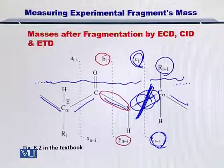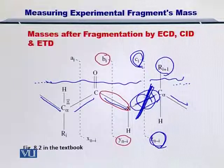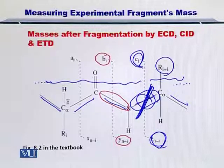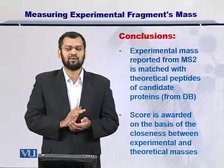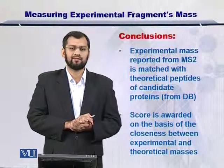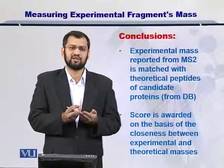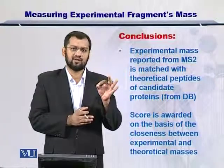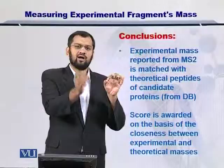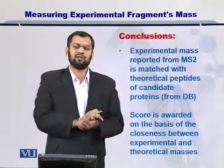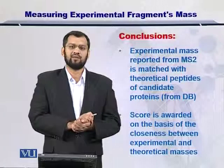Therefore, it is important to remember that if we use ECD and produce C and Z ions, not all C and Z ions will be of equal mass, because the alpha carbon and NH bond will be cleaved differently for different molecules. To conclude, the experimental measurement of the fragments can be done by using tandem MS or MS2. Using a specific fragmentation technique of your choice, you can fragment a specific bond on the backbone of the protein. But since the protein is a polymer, these bonds are repeated and any bond can be cleaved during the fragmentation process, and you can measure the molecular weight of the resulting fragments.